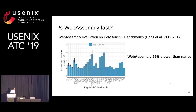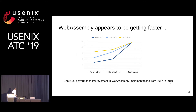To answer this question, the paper that introduced WebAssembly did some evaluation on PolyBench C benchmarks, and they found that WebAssembly is only 26% slower than native. Not only that, if we actually look at the implementations of WebAssembly, they have been continuously improved on these benchmarks.